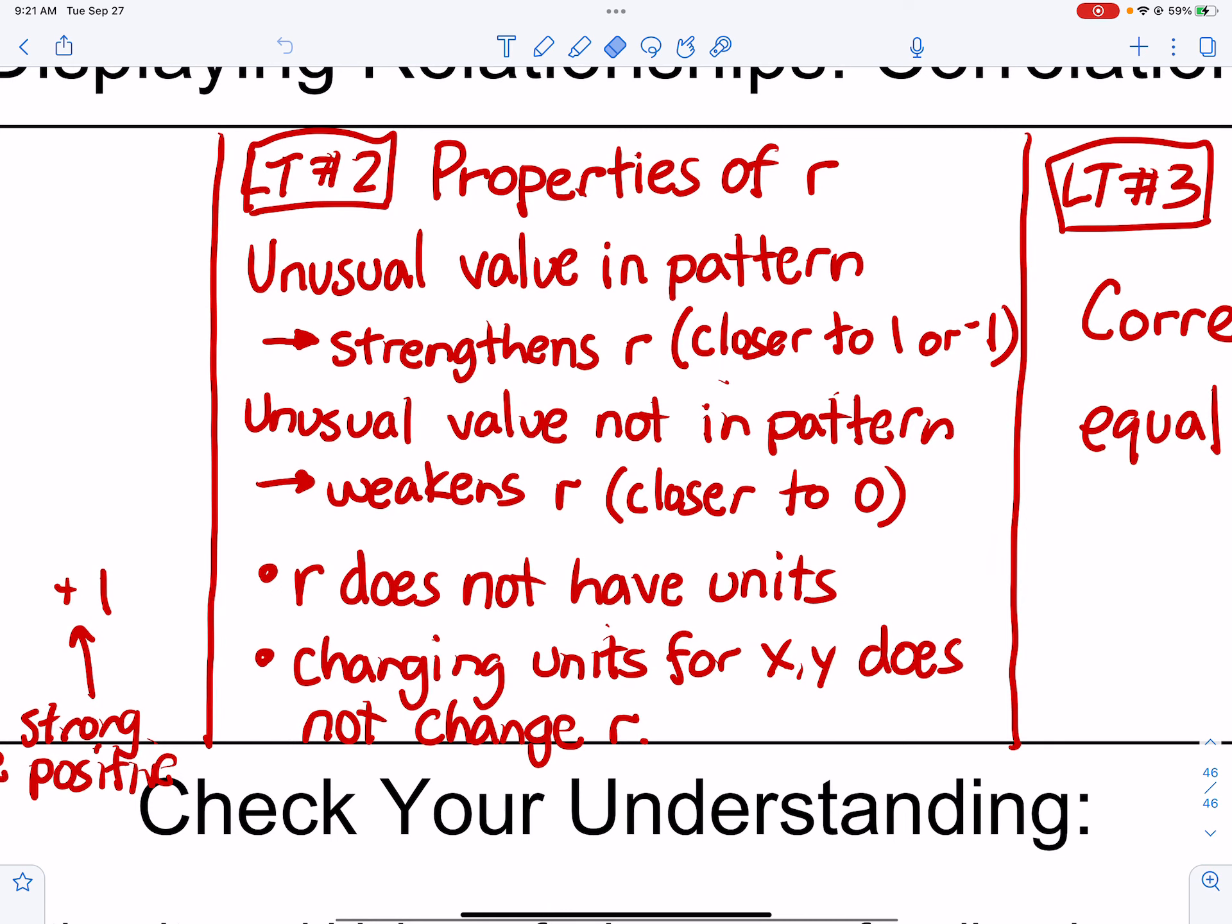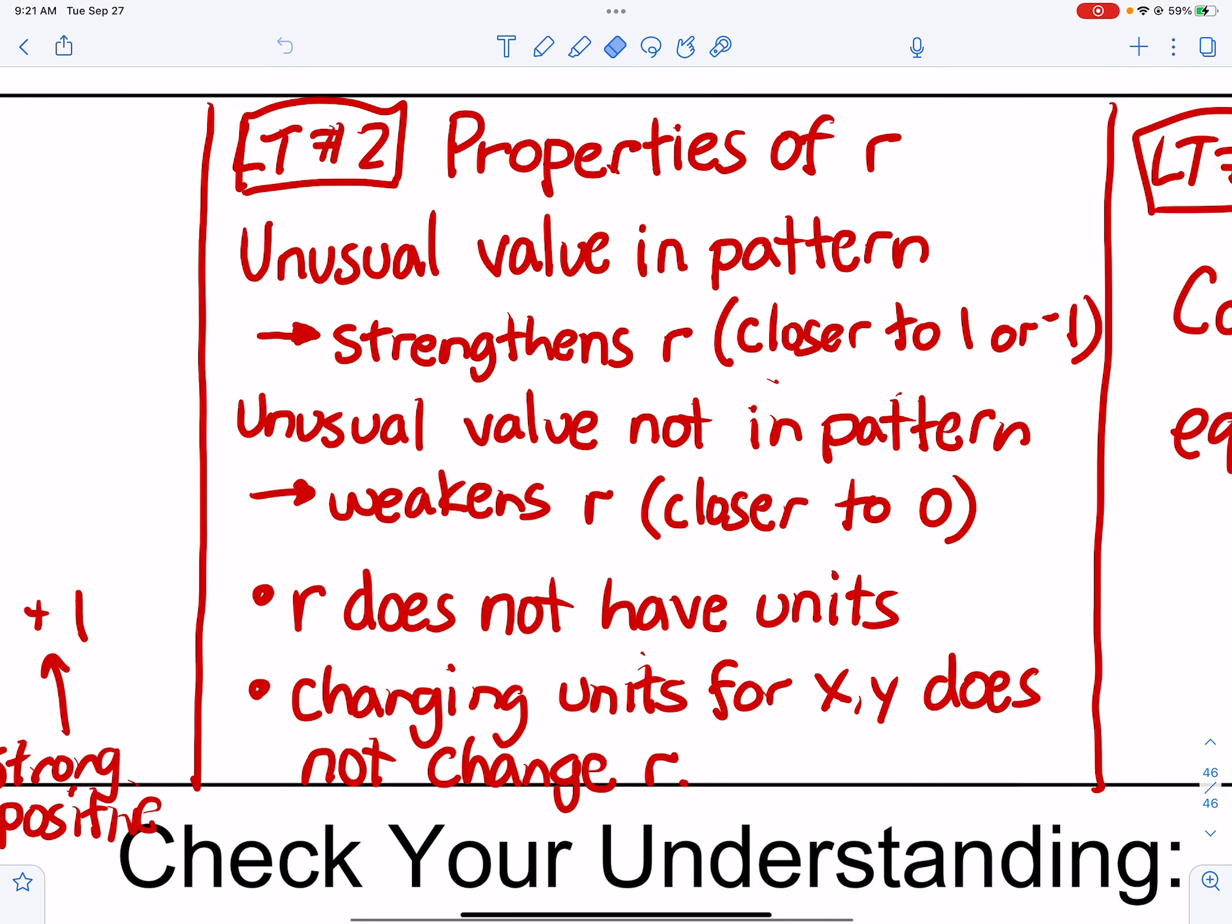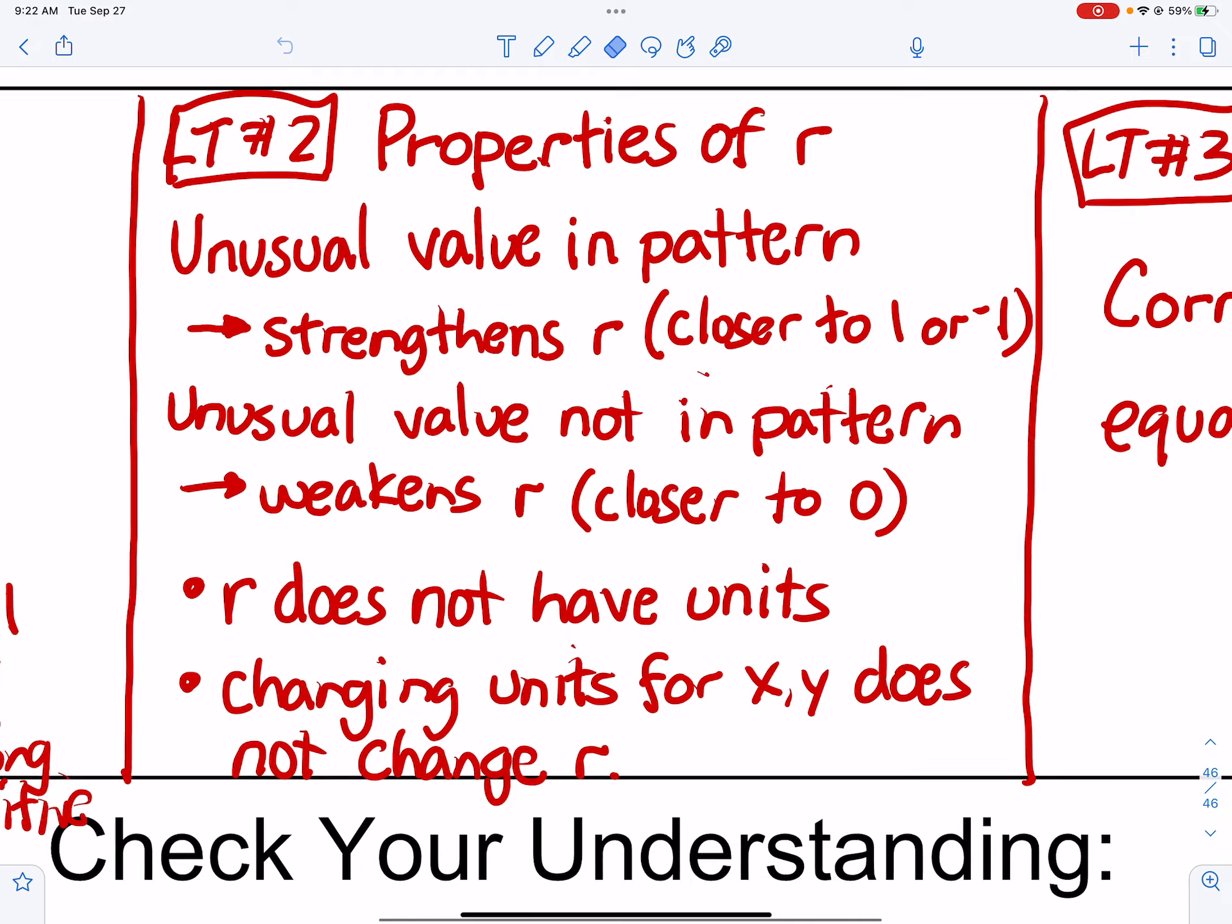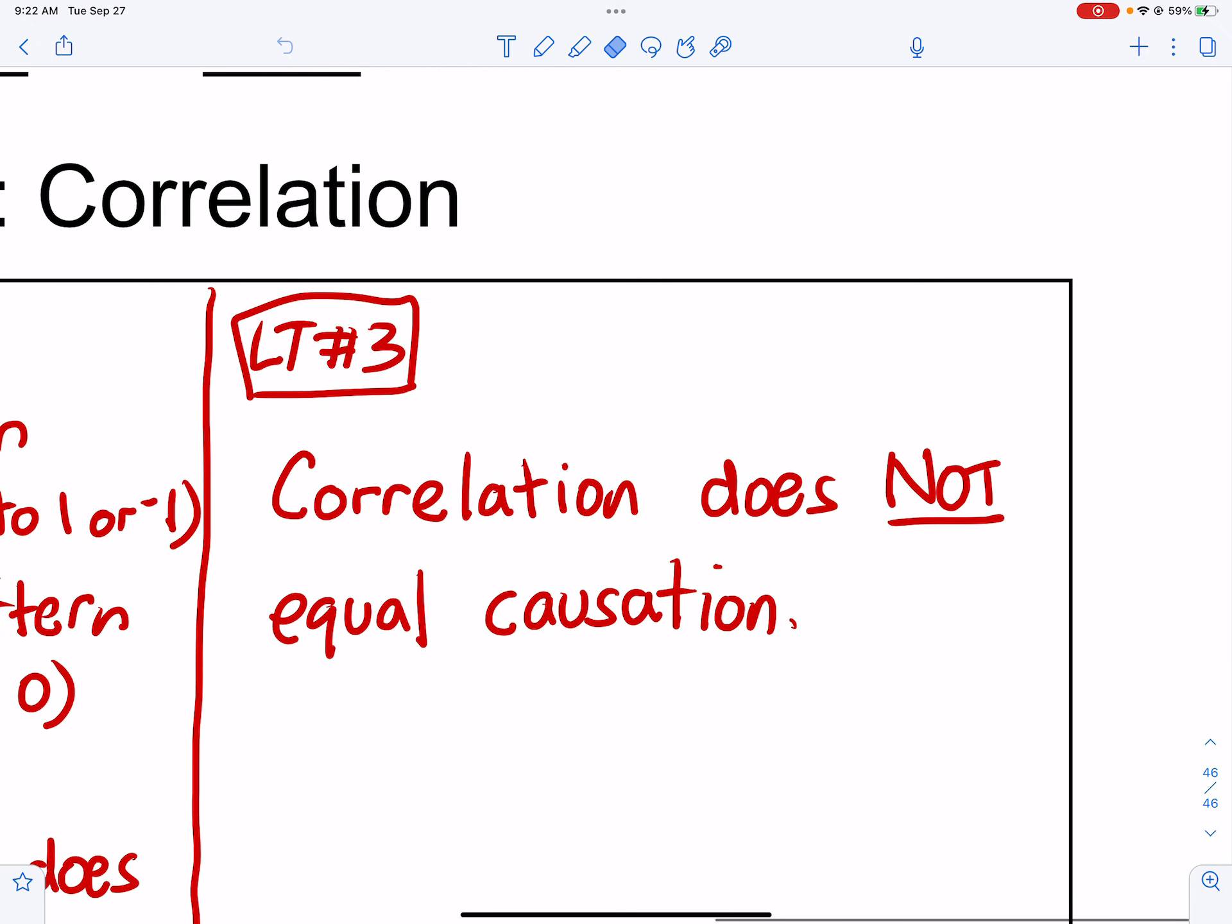Learning target number 2 just shows you the properties of R. Just remember that unusual values and patterns, so for instance, the unusual features for the outliers, it strengthens R as long as it's in the pattern. If it's not in the pattern, then it weakens R, so it makes it closer to 0. R has no units, and changing the units for X and Y does not change R. And the last learning target that we spoke about with our silly or spurious correlations is correlation does not equal causation, or correlation does not imply causation.